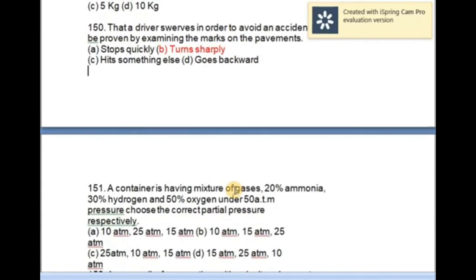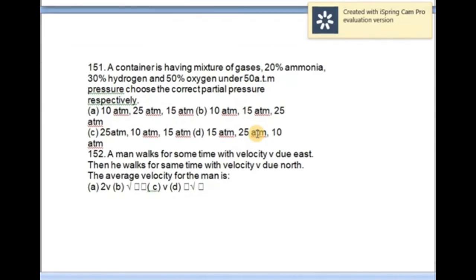This is one passage. A container is having mixture of gases: 20% ammonia, 30% hydrogen, and 50% oxygen under 50 atm pressure. Choose the correct partial pressure respectively. The correct option is...